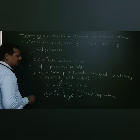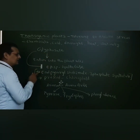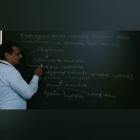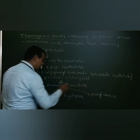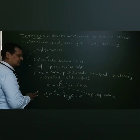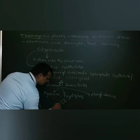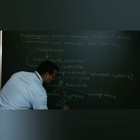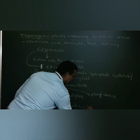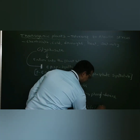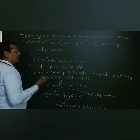When glyphosate is applied to the plant cells, this enzyme is inhibited by the glyphosate, and these three types of amino acids are not synthesized in the plant cells. Hence, plant growth is inhibited and sometimes plants die.